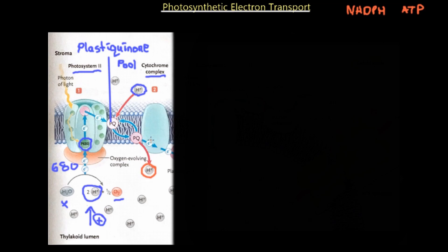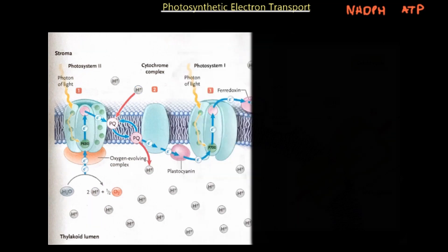At the cytochrome complex, plastoquinone releases its proton and electron. In the stroma, the positive charge decreases because the proton is removed by the plastoquinone, while on the lumen side the force continuously increases as the proton is released by the oxidized plastoquinone. This is the second mechanism by which we build our proton motive force.